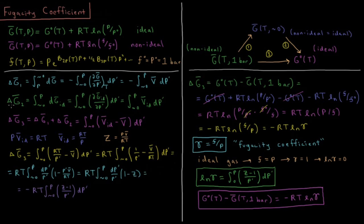For the molar Gibbs energy change during process two — compressing an ideal gas from approximately zero bar up to one bar — we have the integral from 0 to P of dG̅_ideal, which equals the integral from 0 to P of (∂G̅/∂P) dP, which is the integral from 0 to P of the ideal molar volume V̄_ideal integrated over pressure.